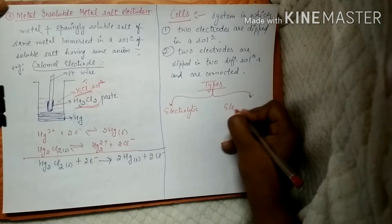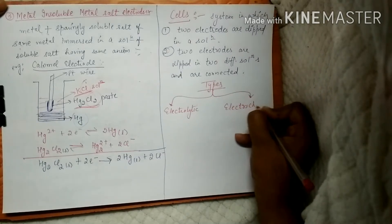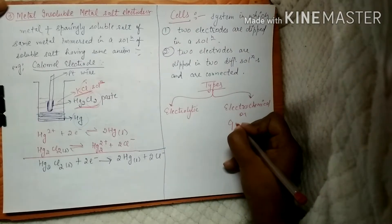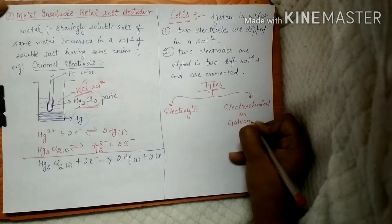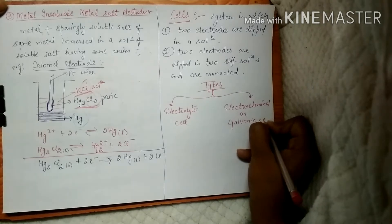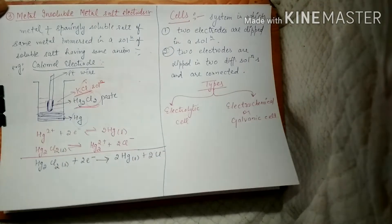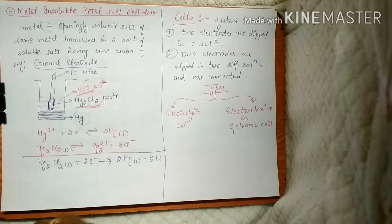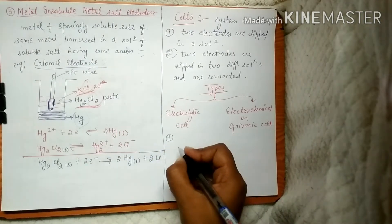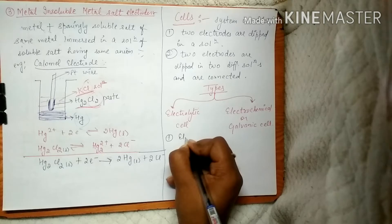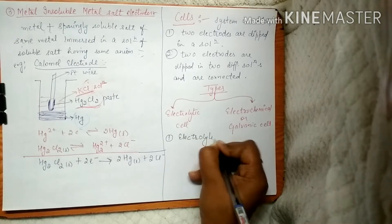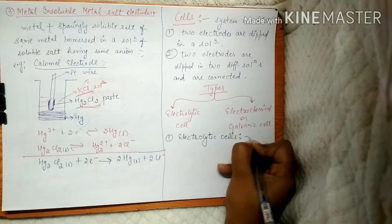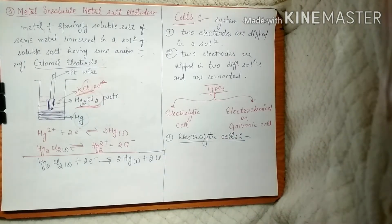Now, the types of cells: cells could be of two types. One could be your electrolytic cell, and the second could be your electrochemical cell, also called a galvanic cell.